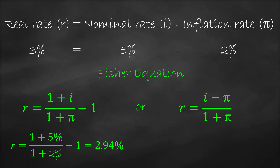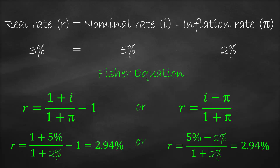When it comes to calculations, please use the Fisher equation because it's more accurate. Using the alternative form: nominal rate five percent minus inflation rate two percent, divided by one plus inflation rate two percent, also gives us a real rate of 2.94 percent.